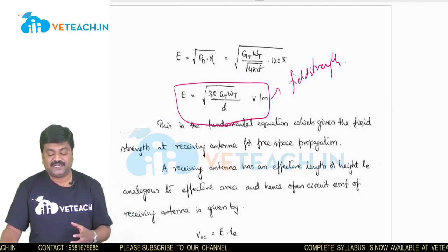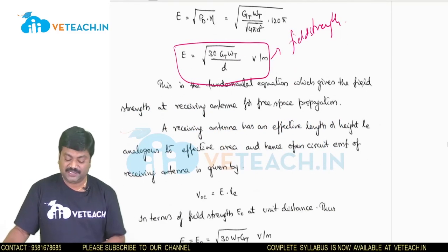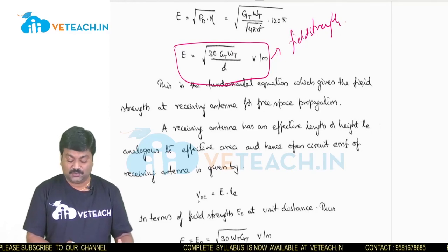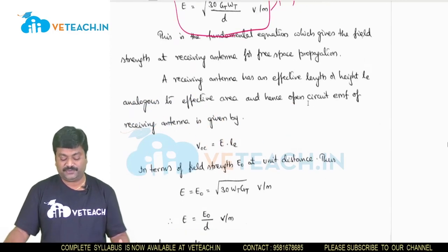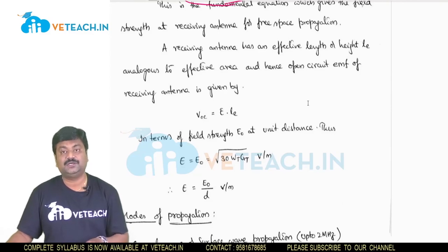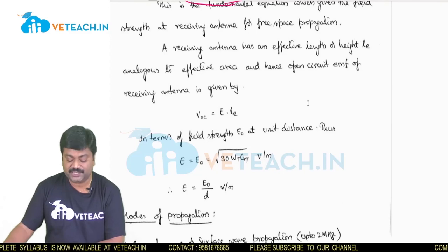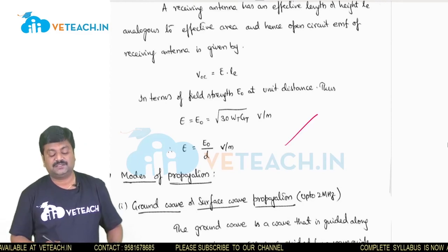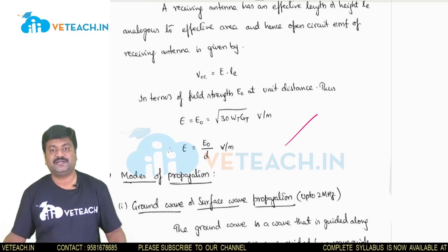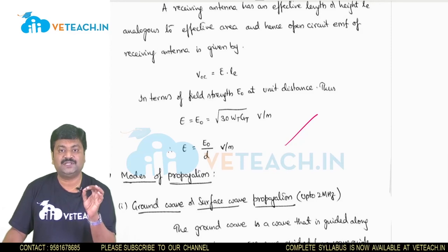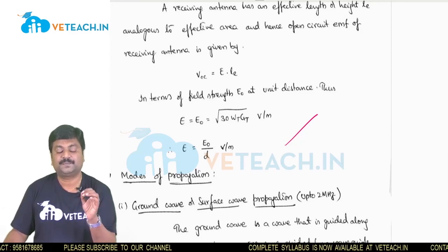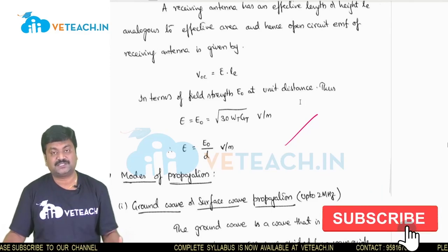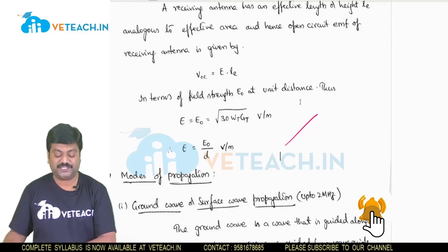The receiving antenna has an effective length or height analogous to area. The open circuit EMF is Voc = E × effective length. In terms of field strength: E = E₀ = √(30 × Wt × Gt), and therefore E = E₀/d. This is the field strength at unit distance. The free space equation is always calculated on the basis of power density, calculated from transmitted power to received power. Try to practice the notations clearly. Good luck.